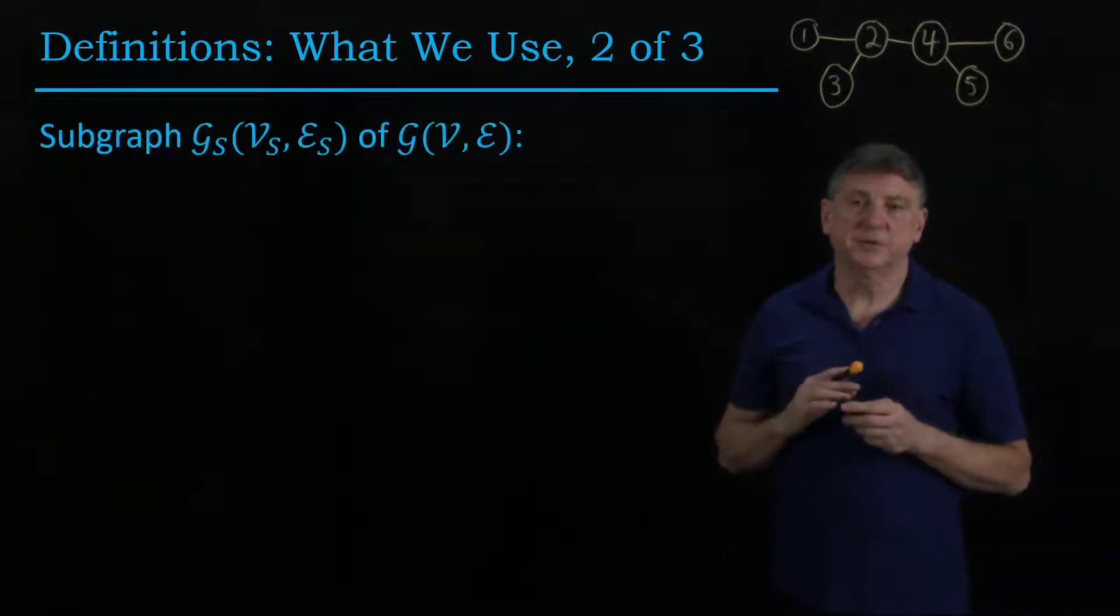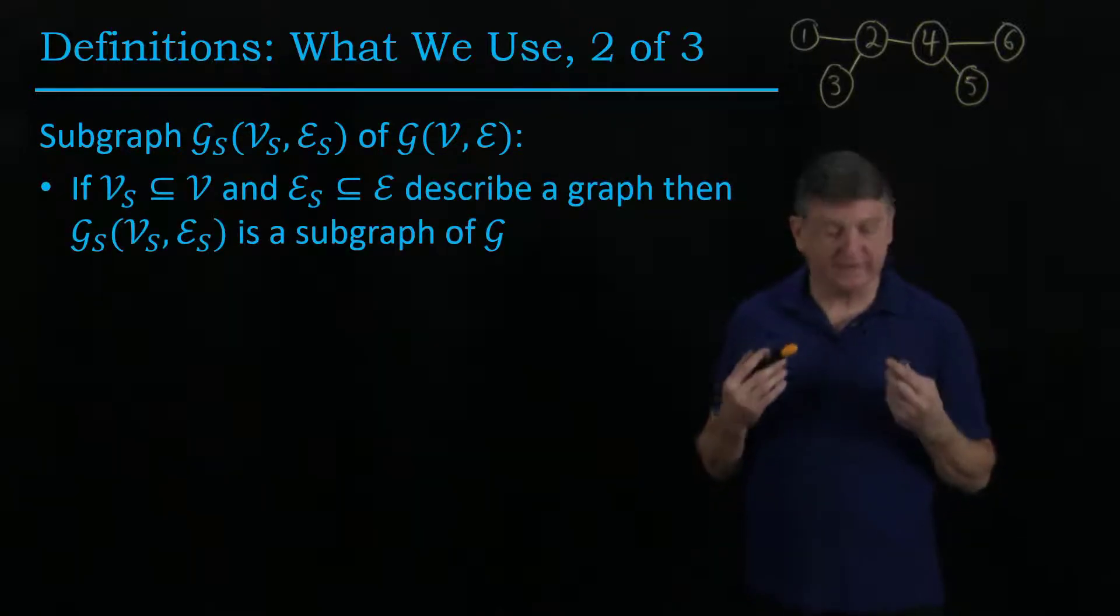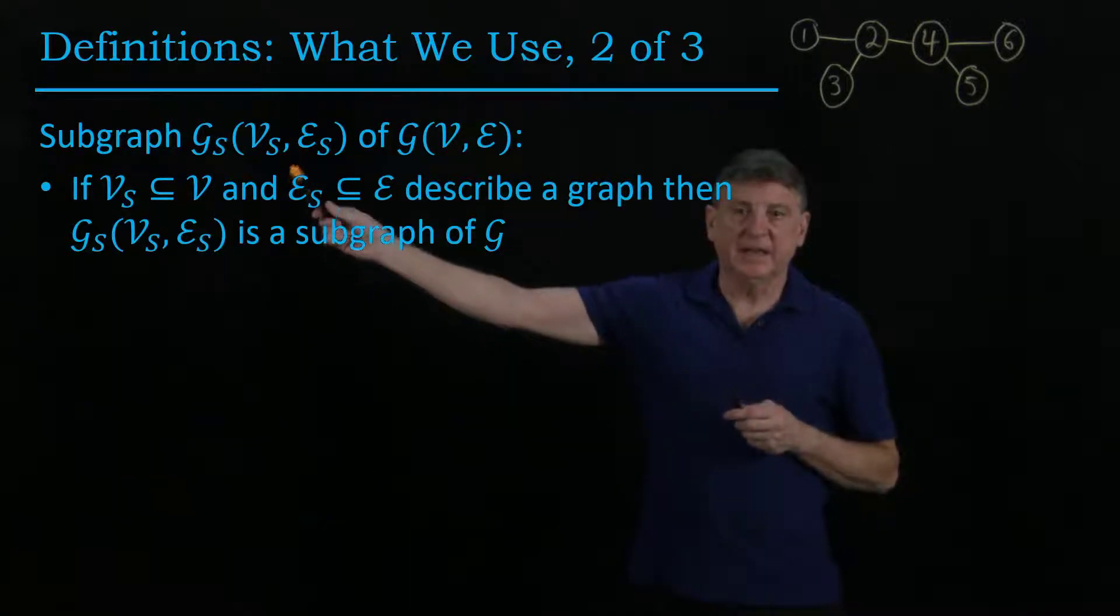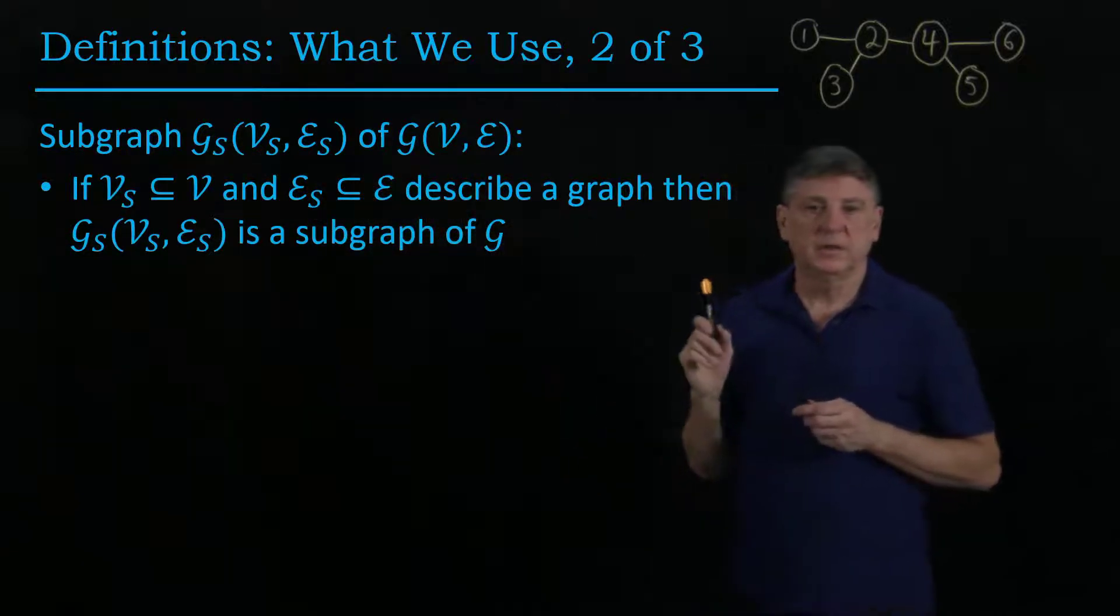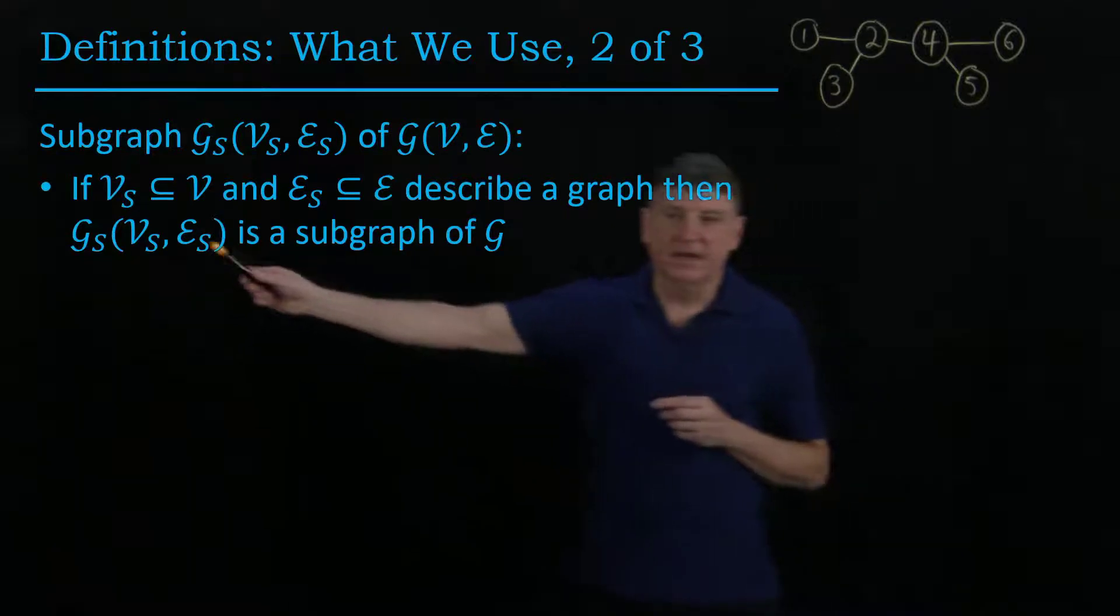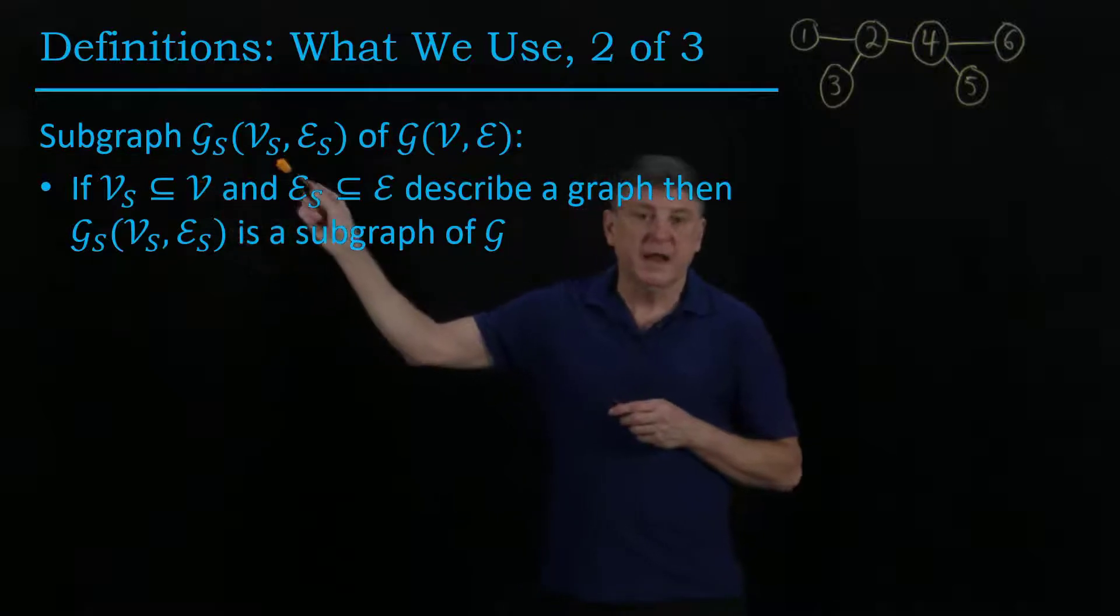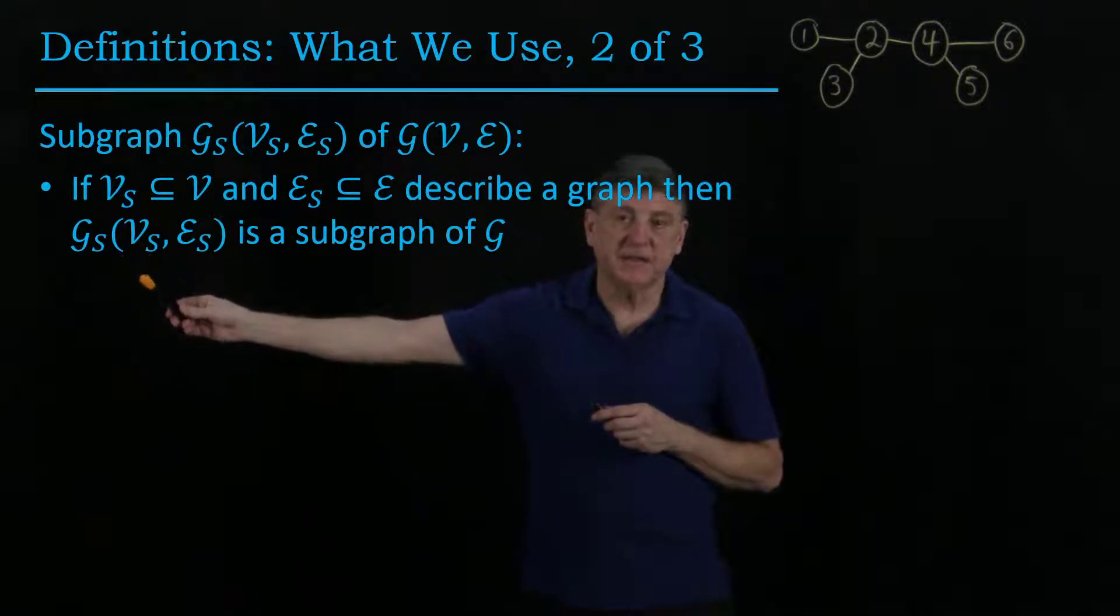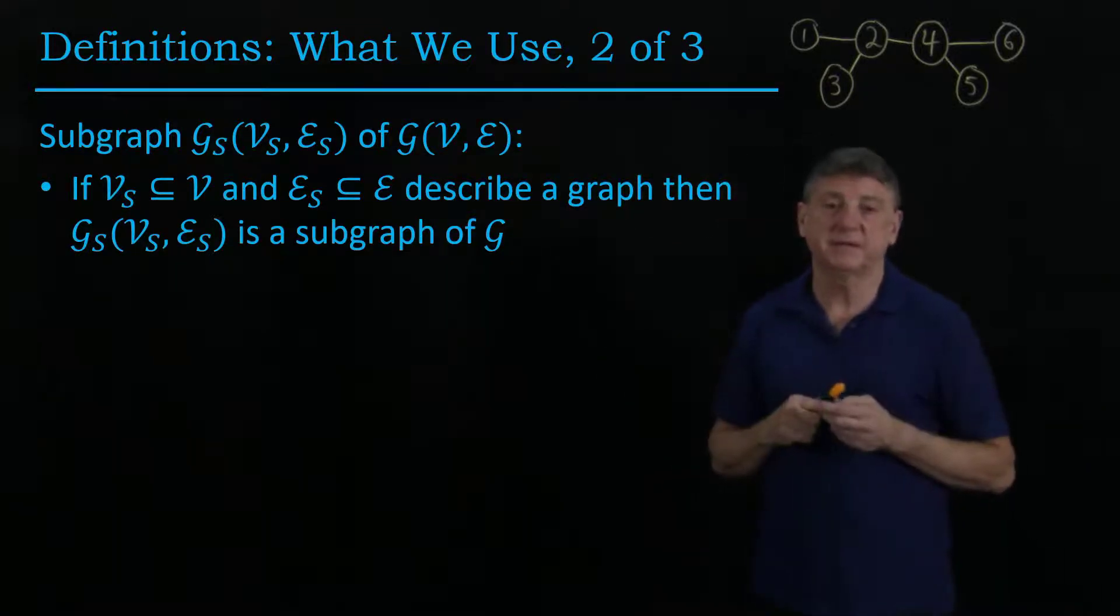The next set of definitions we'll use are a subgraph. This has a very complicated statement, but it's really a fairly easy concept. What it says is that this structure is a subgraph of this. We'll define that as meaning that every vertex in the subgraph is a vertex of the graph. Every edge of the subgraph is an edge of the graph. And when we combine this set of vertices and this set of edges, they are a graph according to our previous definition.